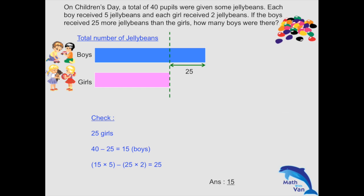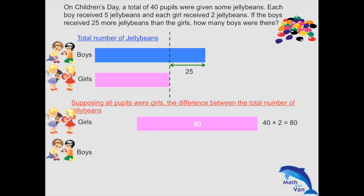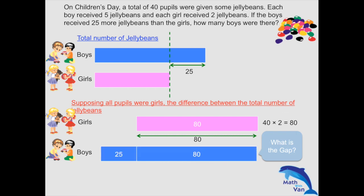Now let's move on to the other perspective, starting from the assumption that all pupils were girls. So all 40 pupils were girls — the girls would have a total of 80 jelly beans and zero boys, so the difference between them would be 80. At this point, the girls would have more than the boys. But remember, in the actual question, the boys received 25 more jelly beans than the girls. So what is the gap that the boys have to close? Other than closing the 80 — because boys need to have more than girls — on top of that, the boys had 25 more. So the gap to close is actually 25 plus 80.